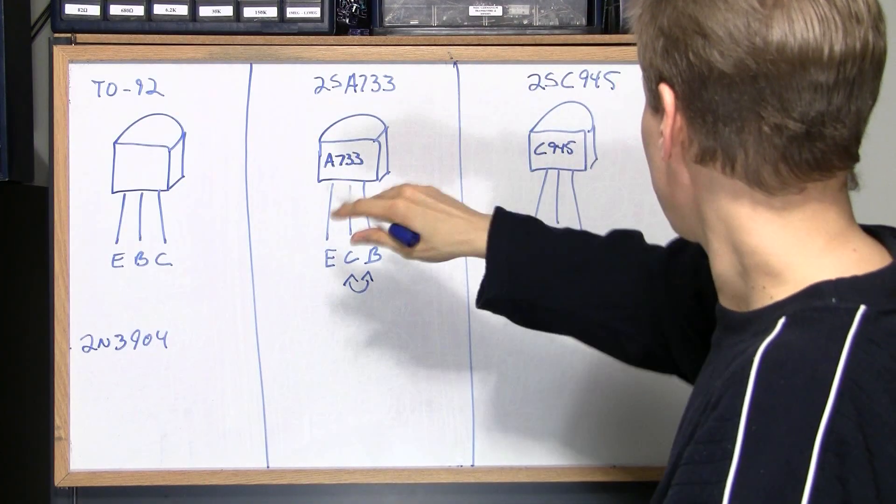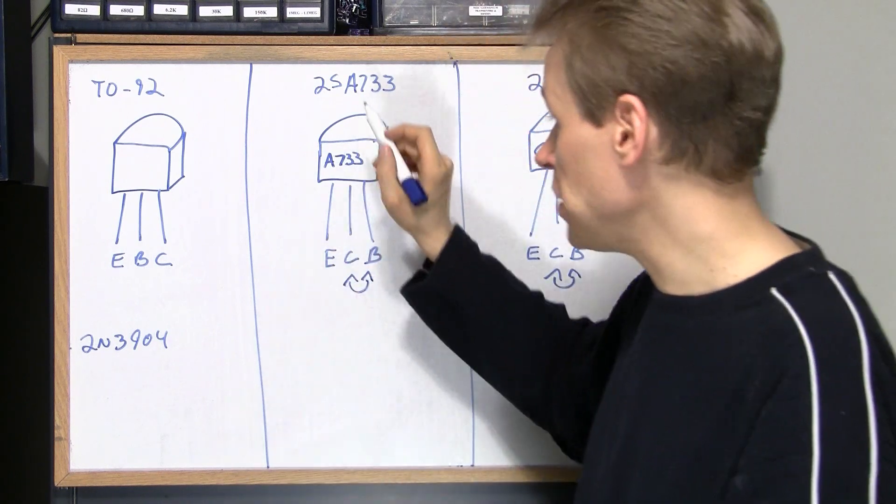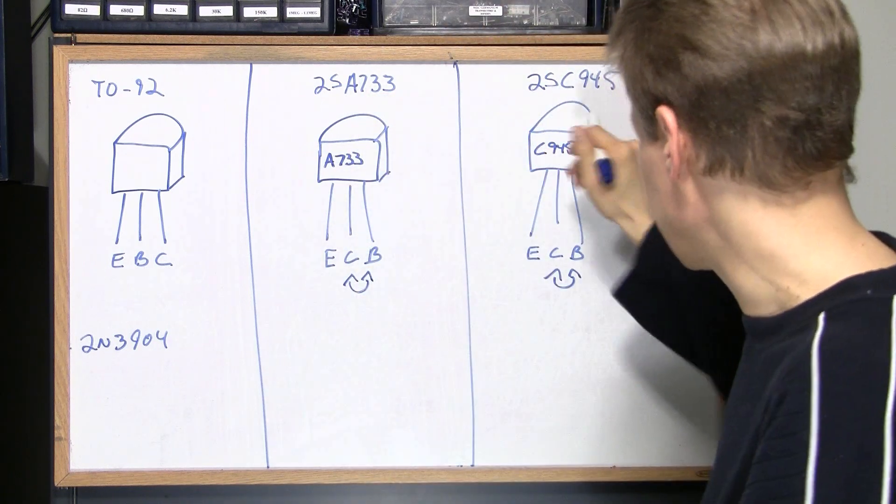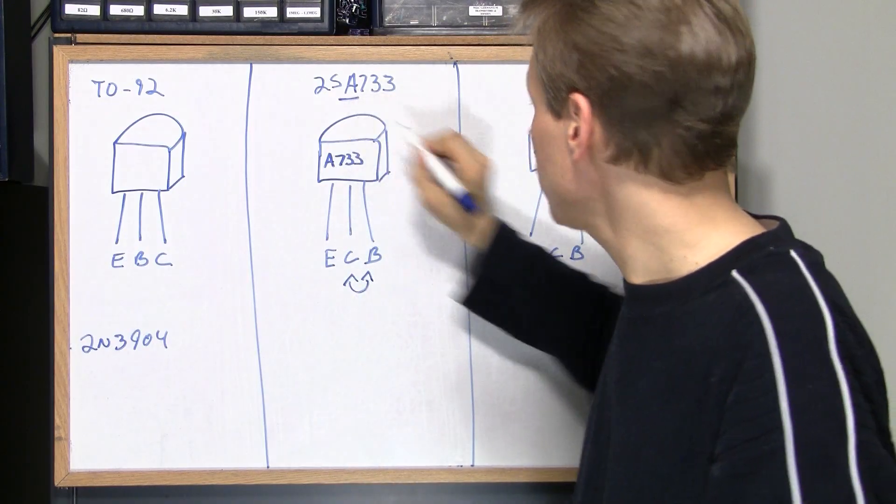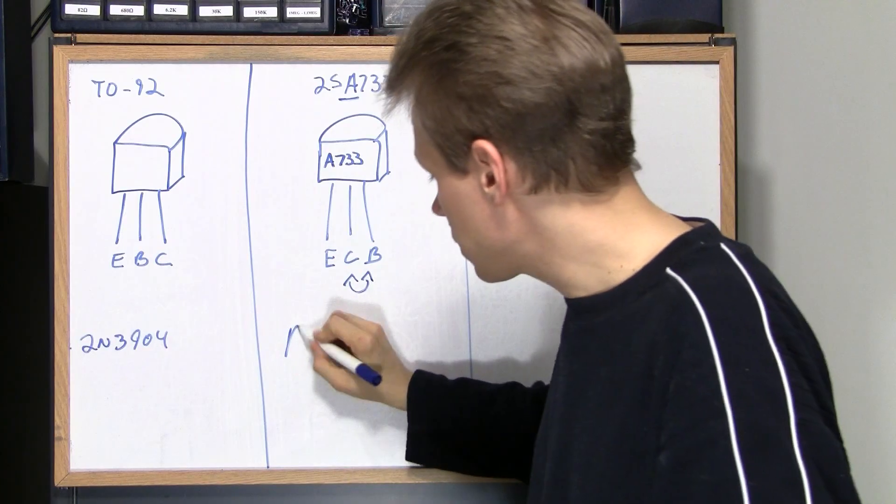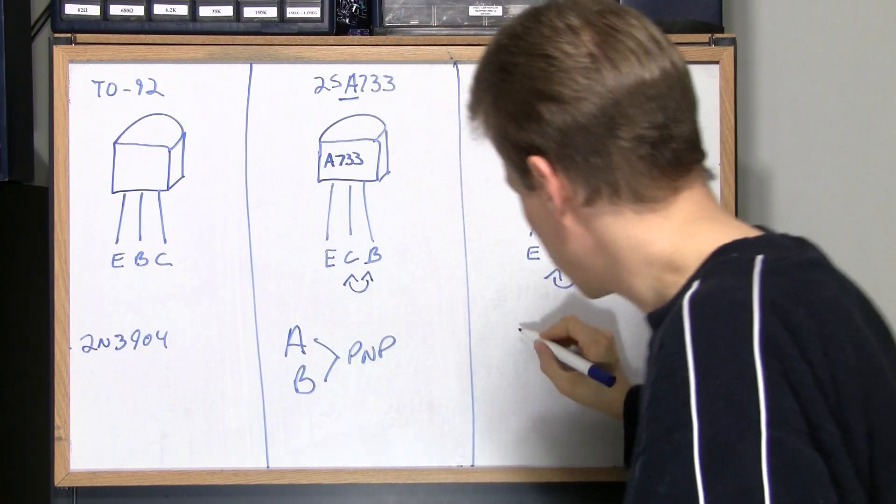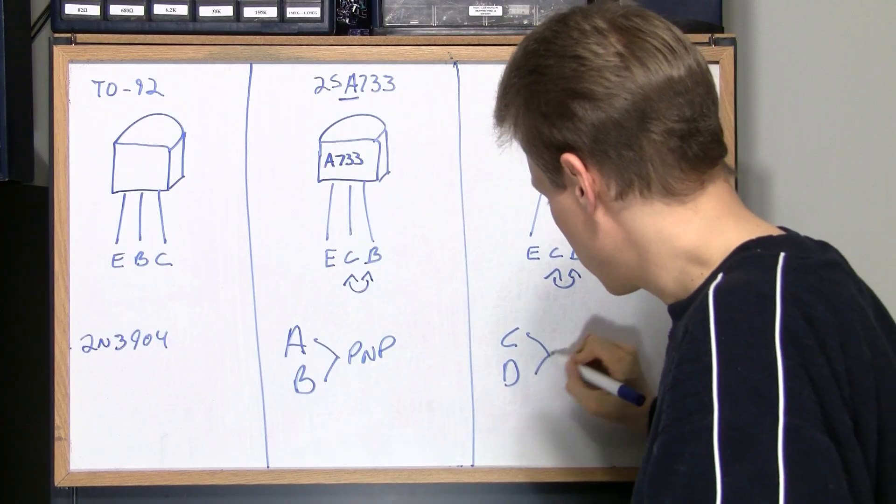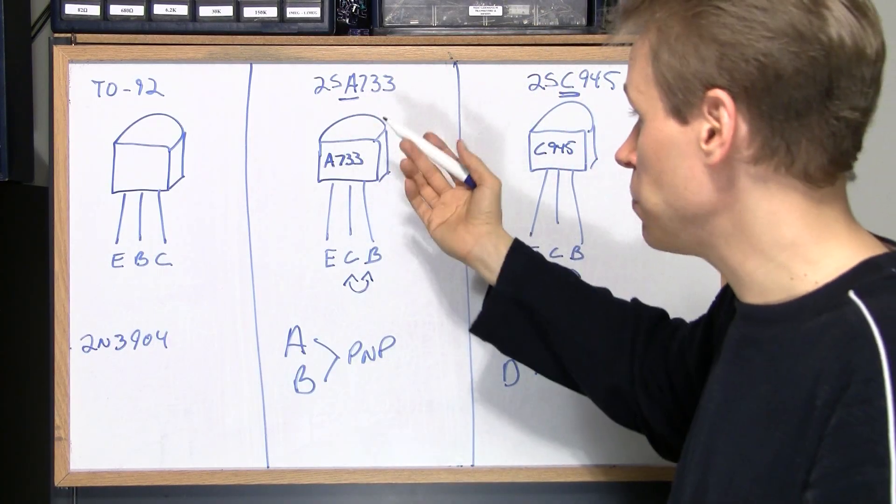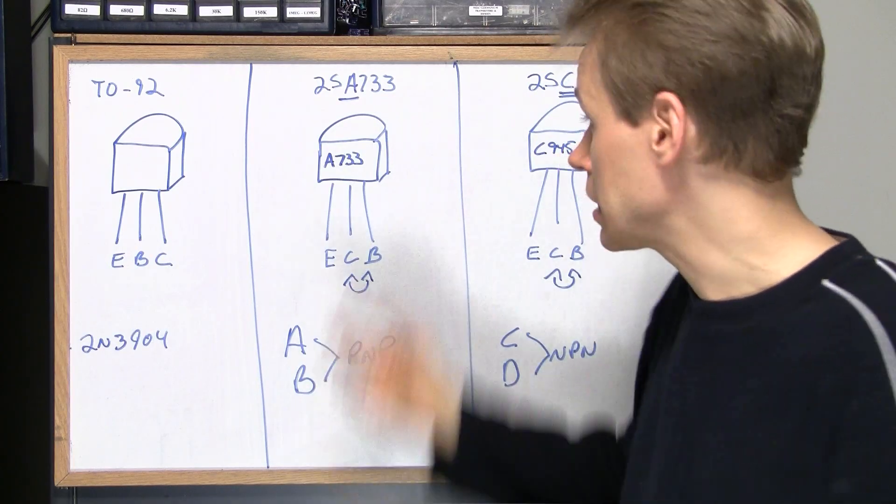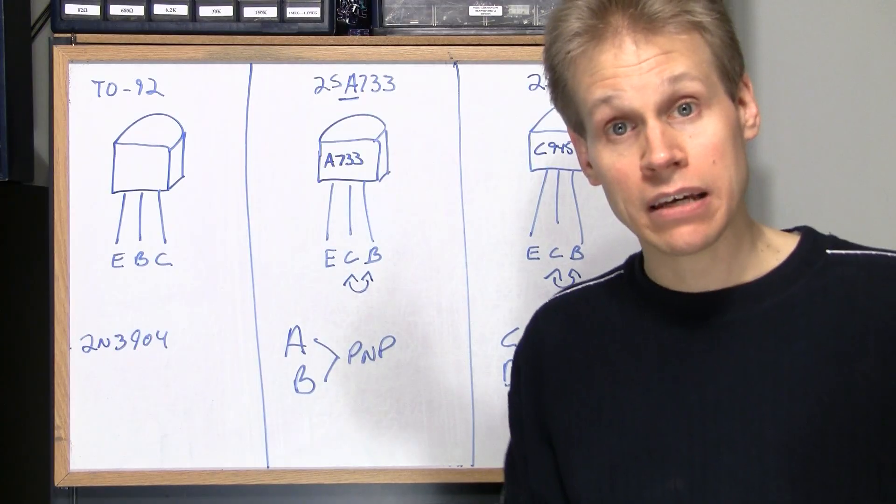So now, we know two very important things by looking at these transistors already. I know that this is a PNP transistor and I know that that's an NPN transistor. And how we define that is by this right here: A's and B's are PNP, C's and D's are NPN transistors. So anything like 2SB whatever, it's a PNP, 2SA it's a PNP, 2SC it's an NPN, 2SD it's an NPN.